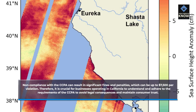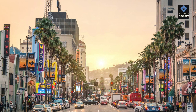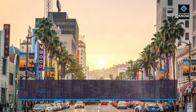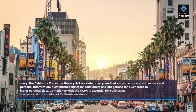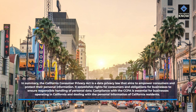Therefore, it is crucial for businesses operating in California to understand and adhere to the requirements of the CCPA to avoid legal consequences and maintain consumer trust. In summary, the California Consumer Privacy Act is a data privacy law that aims to empower consumers and protect their personal information. It establishes rights for consumers and obligations for businesses to ensure responsible handling of personal data.